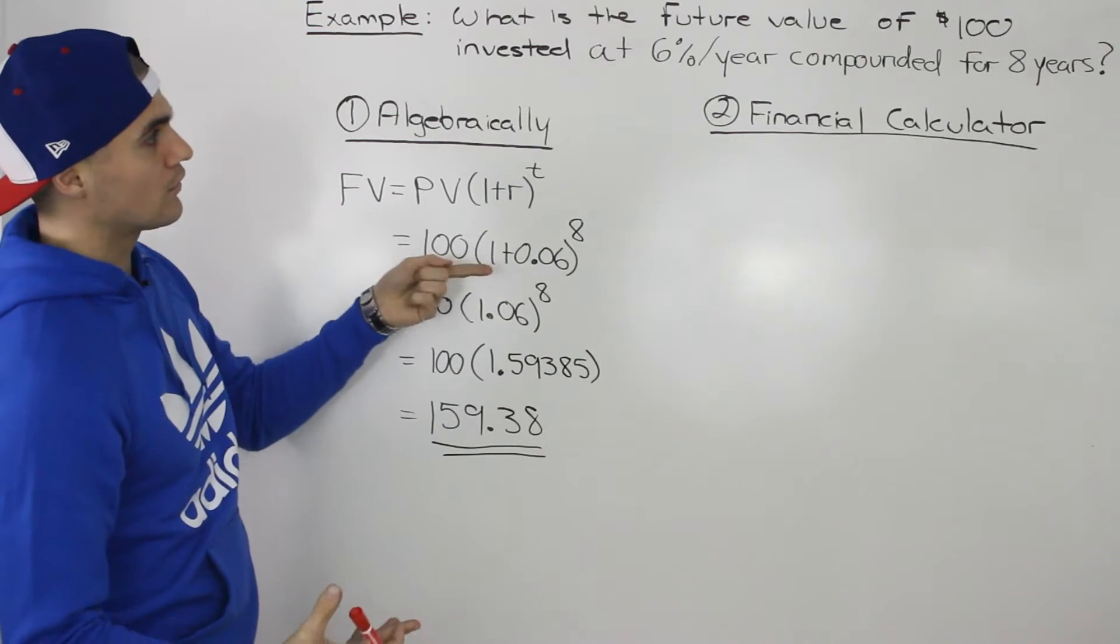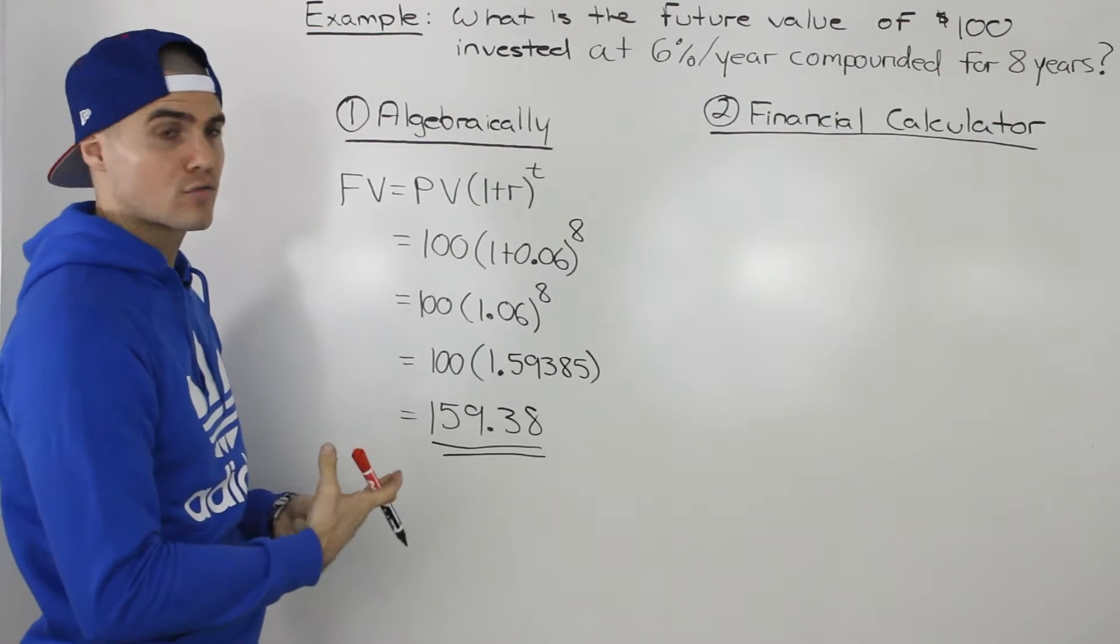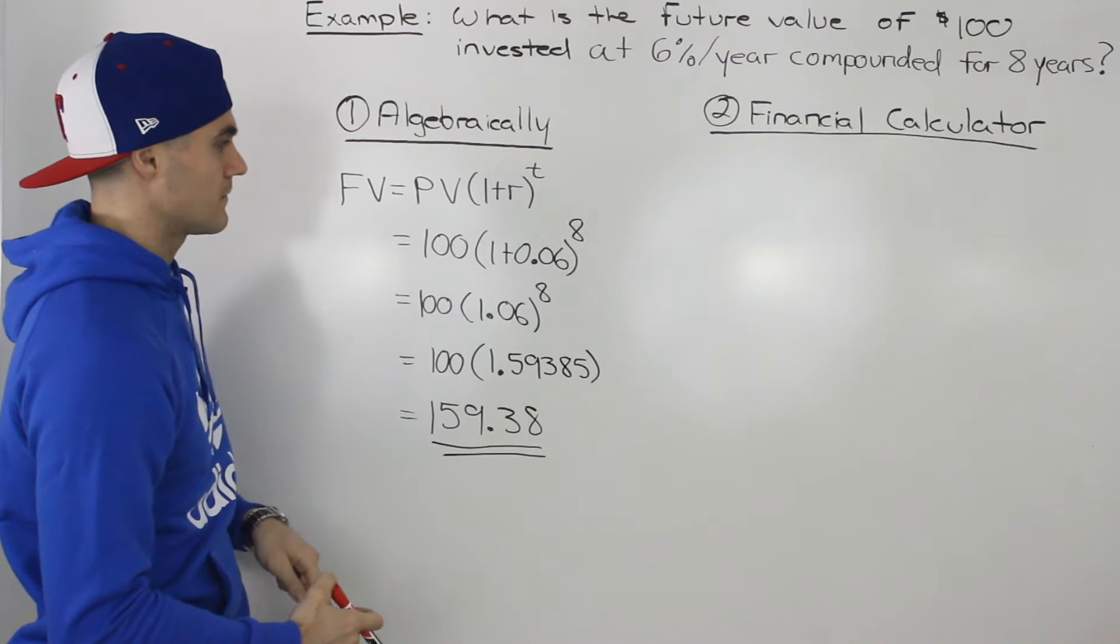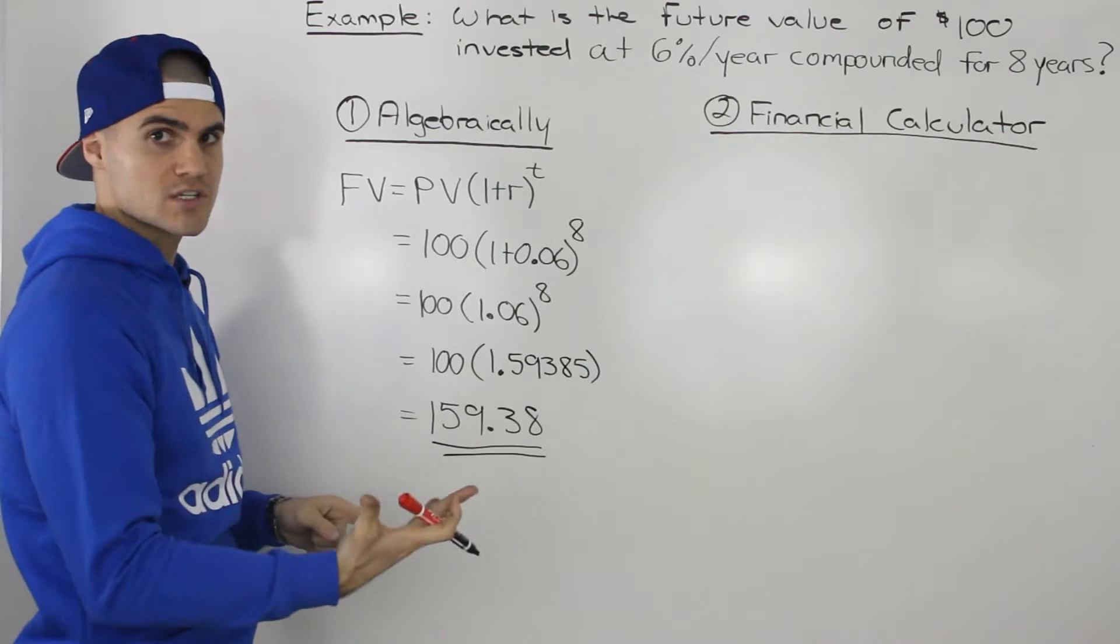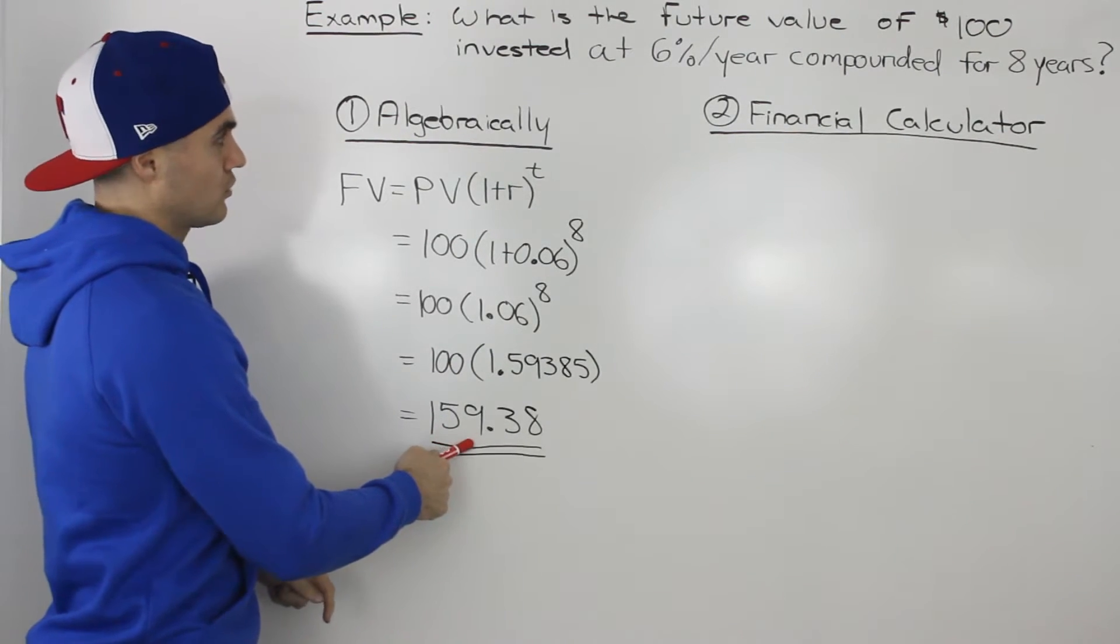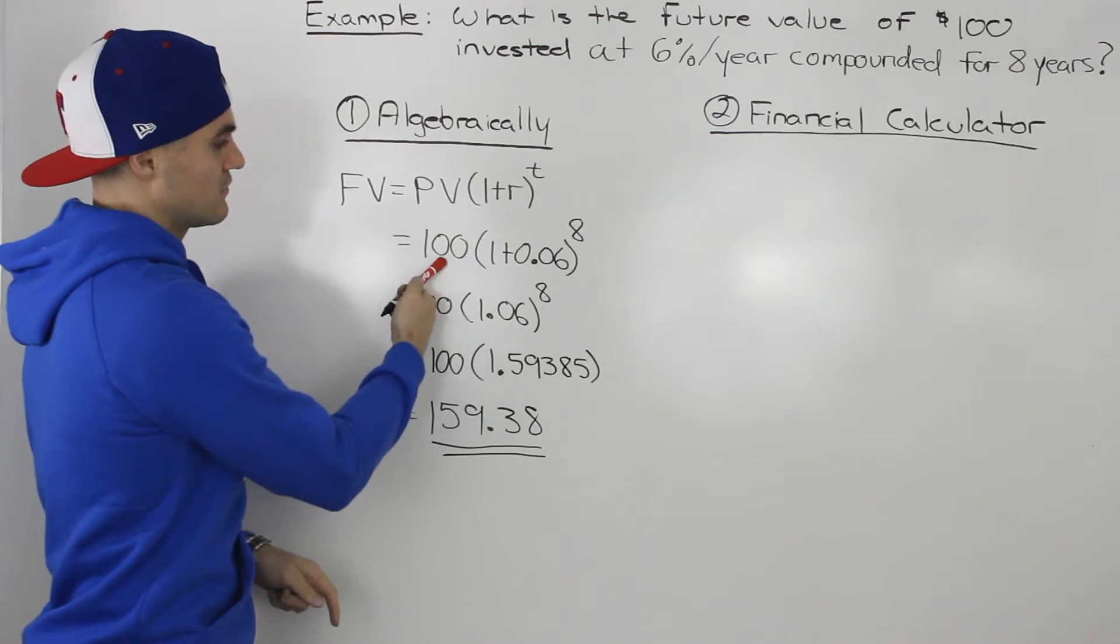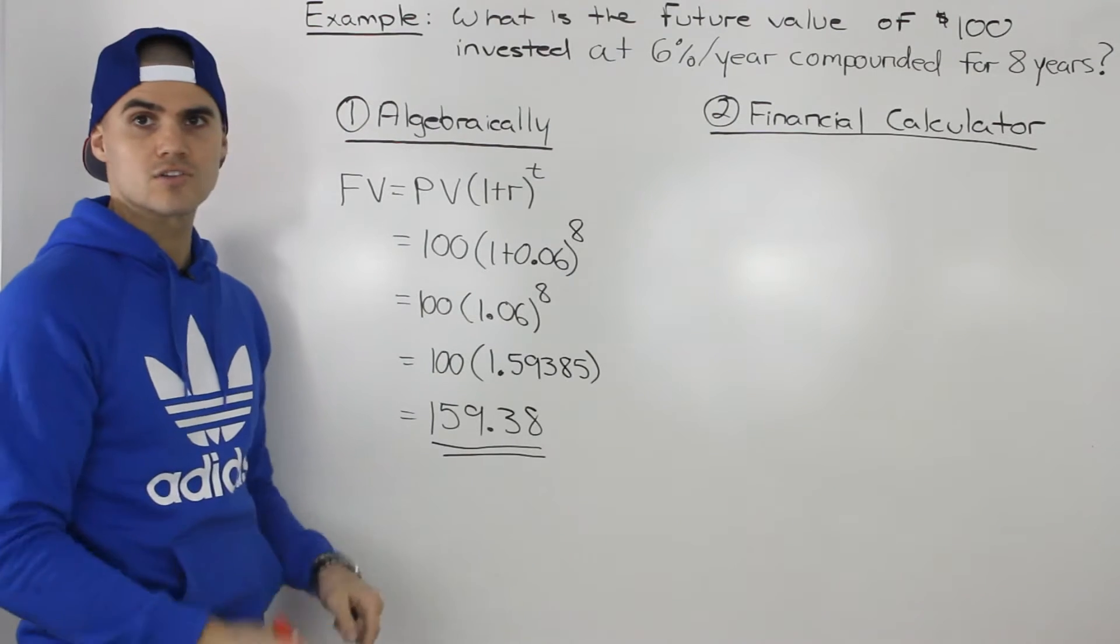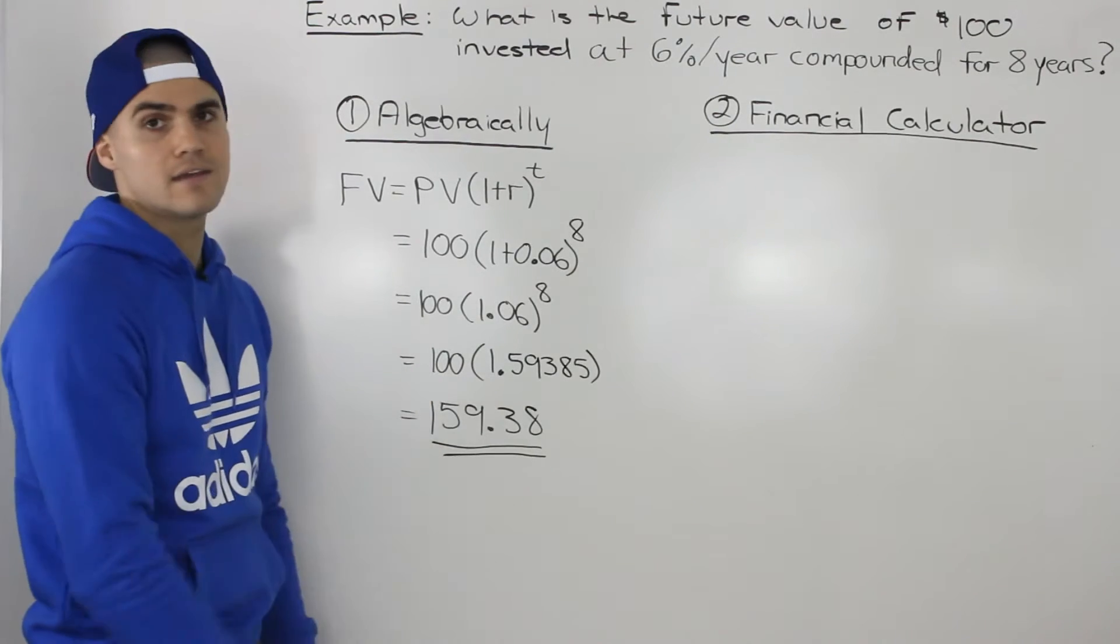So investing $100 at 6% compounded for 8 years, you would end up with $159.38. And if they were asking you how much interest did you earn throughout that time period, we would just take that future value of 159.38 and subtract it from the present value of a hundred. So the interest that we earned was $59.38 over that 8 years.